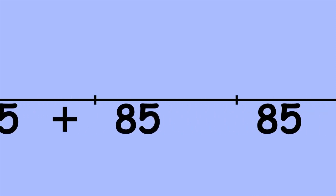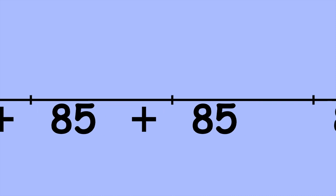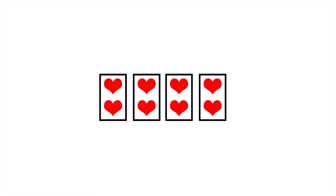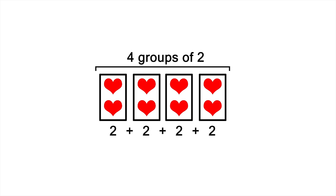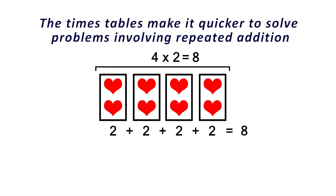But that's going to take a long time, and there's a much quicker way of solving the problem. A problem involving repeated addition can be rewritten as a problem involving multiplication. If I have four groups of two, I can either use repeated addition — 2 plus 2 plus 2 plus 2 — or if I know my times tables, I can multiply 4 times 2, which equals 8. That's what times tables are for: to make problems involving repeated addition quicker to solve.